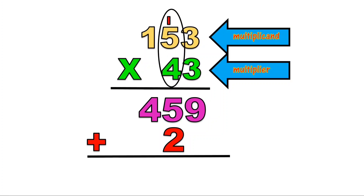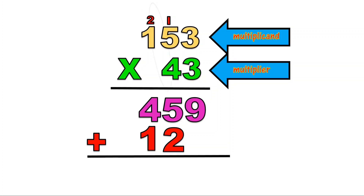Now, let us proceed to the tens place of the multiplicand, which is 5. 4 times 5 is equal to 20, plus 1 is equal to 21, remainder 2. This time, let us multiply the hundreds place of the multiplicand, which is 1, by the tens place of the multiplier, which is 4. 4 times 1 is equal to 4, plus 2 is equal to 6.